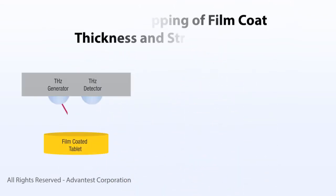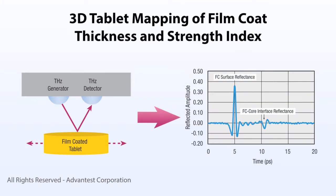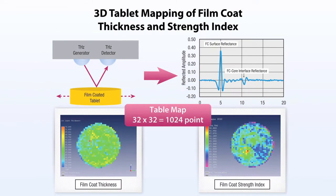Three-dimensional mapping is achieved by recording a trace for each discrete spot in the array covering the tablet surface. The 3D map shows the spatial uniformity of film coat thickness, and additional parameters, such as film coat strength, can also be derived from the same dataset.